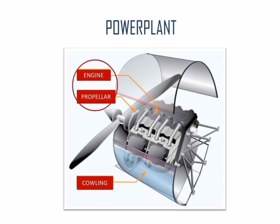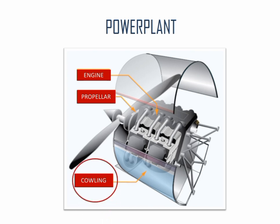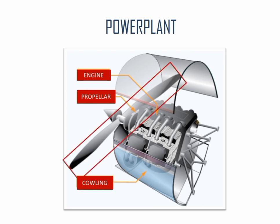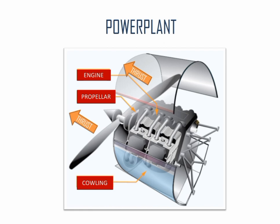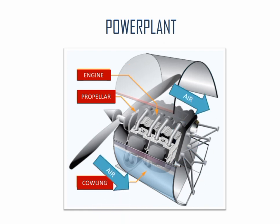Power plant. Engine and propeller combine to make a power plant. The engine produces energy to rotate the propeller and push the aircraft forward. The engine is covered in cowling which helps the engine to maintain a streamline shape. These are the propellers which rotate and create thrust by pushing air backward and moving the aircraft forward.